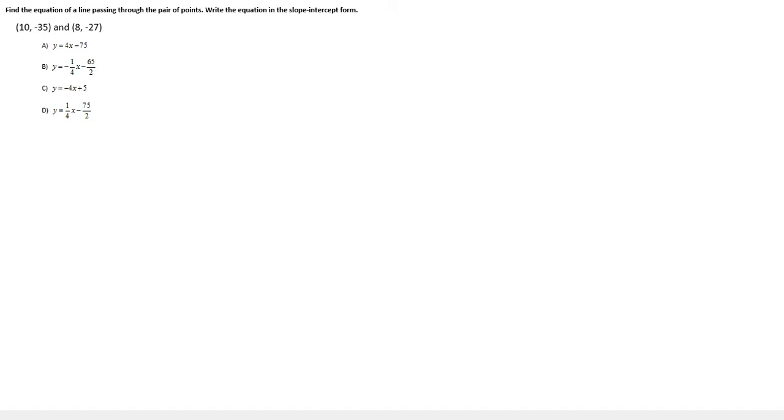Find the equation of a line passing through the pair of points. Write the equation in slope-intercept form. First ordered pair is 10, negative 35, and the second ordered pair is 8, negative 27.